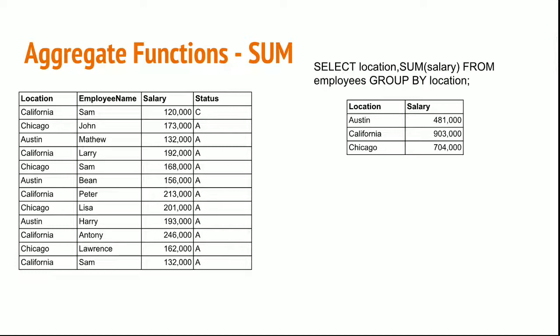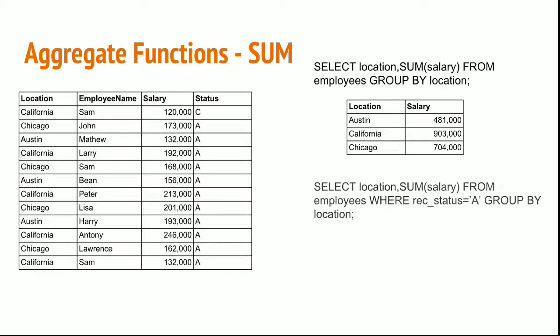You can see that the salaries in California are way ahead of the real number. This is because of employee Sam's record being duplicated with both a closed and an active record. To avoid the closed record and consider only the active record, we need to use the WHERE predicate and write the statement accordingly.